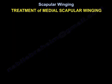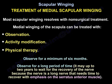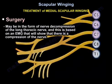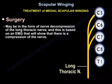Most scapular winging resolves with non-surgical treatment. Medial winging of the scapula can be treated with observation, activity modification, and physiotherapy. Observe for a minimum of six months — it may take up to two years to wait for recovery of the nerve. The long thoracic nerve is a long nerve that needs time to recover. Surgery may be in the form of nerve decompression of the long thoracic nerve, based on EMG showing compression of the nerve.